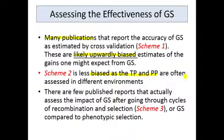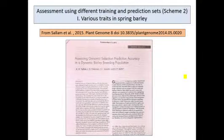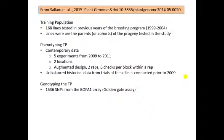Let's look at some of these studies. We'll start with one that uses scheme two to assess whether genomic selection has been working, done with various traits in spring barley. I chose to present these examples from the literature because they are illustrative of how people are using genomic selection. As you go through these, think back to your own breeding program, consider how you're doing your breeding compared to what these people are doing, and think about how genomic selection can fit into your program.